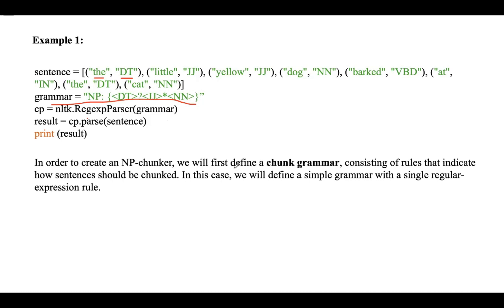To create an NP chunker, we first need to define chunk grammar. This grammar consists of rules that indicate how sentences should be chunked — that is, how to divide a sentence into multiple phrases or chunks. We define a simple grammar with a single regular expression rule. This rule says that an NP chunk should be formed whenever the chunker finds a determiner followed by any number of adjectives and then a noun.